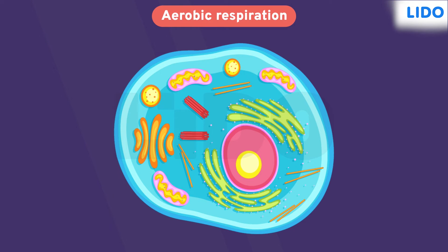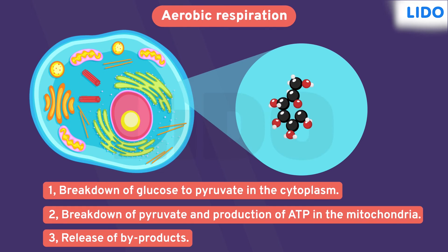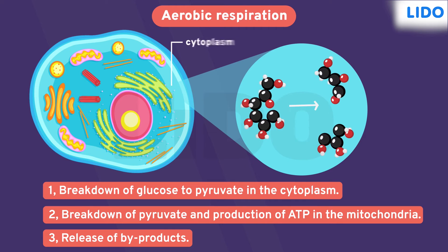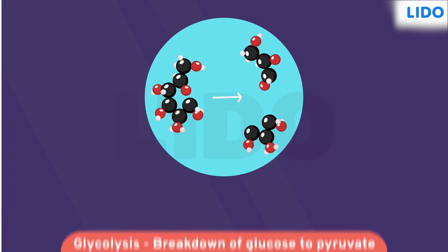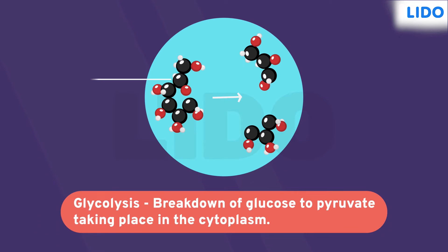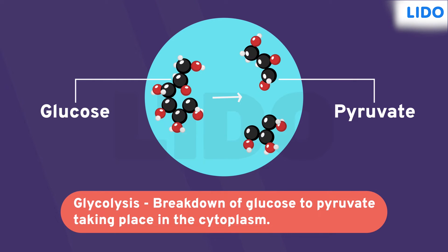Aerobic respiration is a three-step process, in which firstly a 6-carbon glucose molecule from our digested food is broken down in the cytoplasm of the cell to produce a 3-carbon molecule called pyruvate. The process of breaking down glucose to pyruvate in the cytoplasm is called glycolysis.